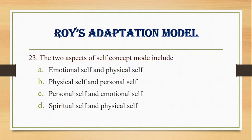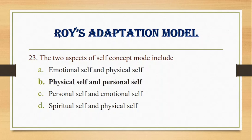Number 23. The two aspects of self-concept mode include: A. Emotional and physical self, B. Physical self and personal self, C. Personal self and emotional self, D. Spiritual self and physical self. Answer: B. Physical self and personal self.